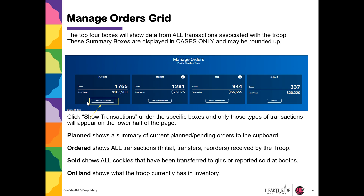Planned Orders shows a summary of current open planned orders to a cupboard. Orders shows all transactions associated with the troop, including any initial orders, transfers in, and direct ship orders. Sold shows all cookies that have been transferred to girls, and Onhand shows what the troop currently has in inventory.